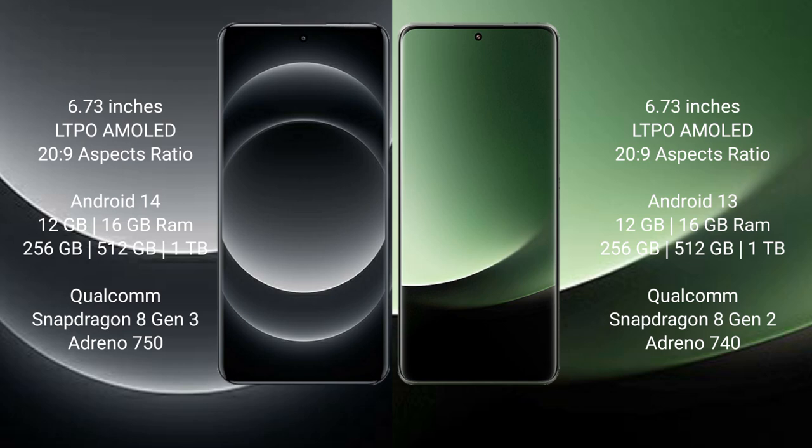The Xiaomi 14 Ultra comes with 12GB and 16GB RAM options and 256GB, 512GB, or 1TB internal storage, powered by the Snapdragon 8 Gen 2 processor. The Xiaomi 13 Ultra also comes with 12GB and 16GB RAM and 256GB, 512GB, or 1TB internal storage, also powered by the Snapdragon 8 Gen 2 processor.